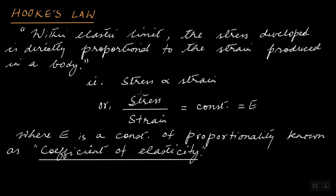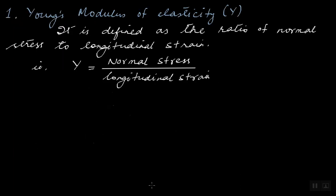Since there are different types of stress and different types of strain, E will also be of different types. The first modulus of elasticity is called Young's modulus of elasticity, denoted by capital Y. It is defined as the ratio of normal stress to longitudinal strain: Y equals normal stress divided by longitudinal strain.